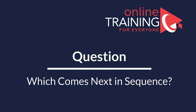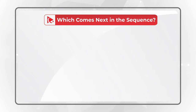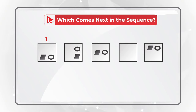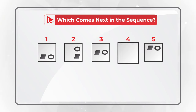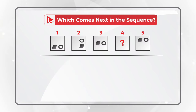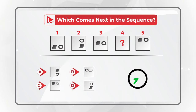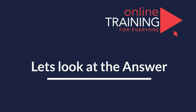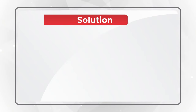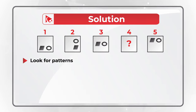I love this question because it really makes you think. You need to determine which shape comes next in the sequence. You're presented with a series of five shapes — squares one, two, three, and five have smaller shapes inside — and you need to determine shape four. You have four choices: A, B, C, and D. As usual, always look for patterns; in this case the pattern is the location of the smaller shapes inside the square.